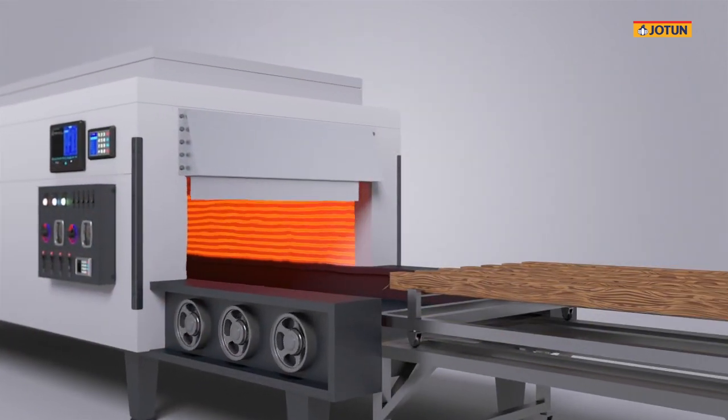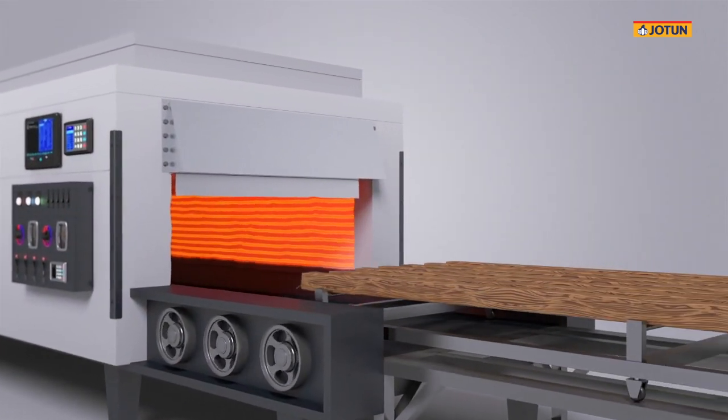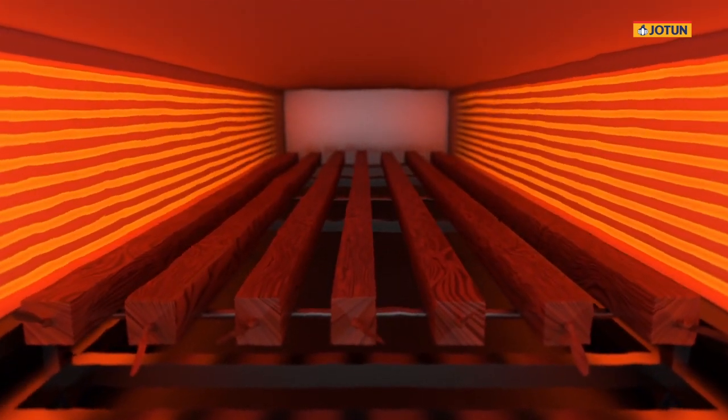The wrapped profiles now proceed to the oven. The temperature heats the film and aluminium profiles, transferring color and pattern into the base coat.